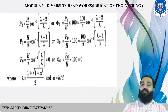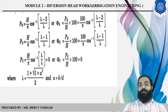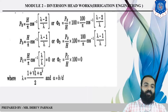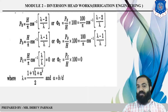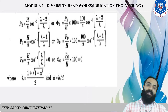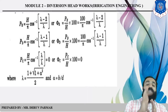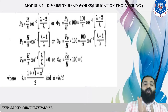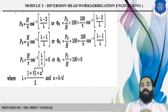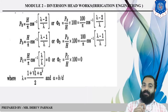For the downstream case, lambda is found as: λ = (1 + √(1 + α²)) / 2, and alpha is equal to b/d. This is the formula to find PE and PD for the downstream case.